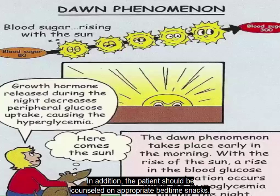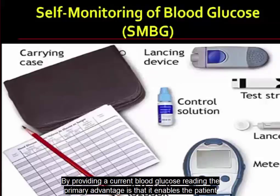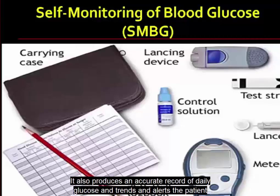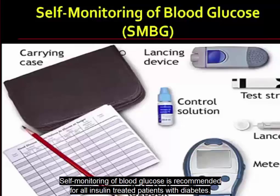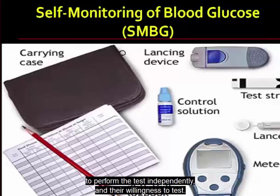Self-monitoring of blood glucose is a critical part of diabetes management. By providing a current blood glucose reading, it enables the patient to make decisions regarding food intake, activity patterns, and medication dosages. It also produces an accurate record of daily glucose trends and alerts the patient to acute episodes of hyperglycemia and hypoglycemia. Self-monitoring is recommended for all insulin-treated patients. The frequency of monitoring depends on the patient's glycemic goals, type of diabetes, medication regimen, ability to perform the test independently, and willingness to test.